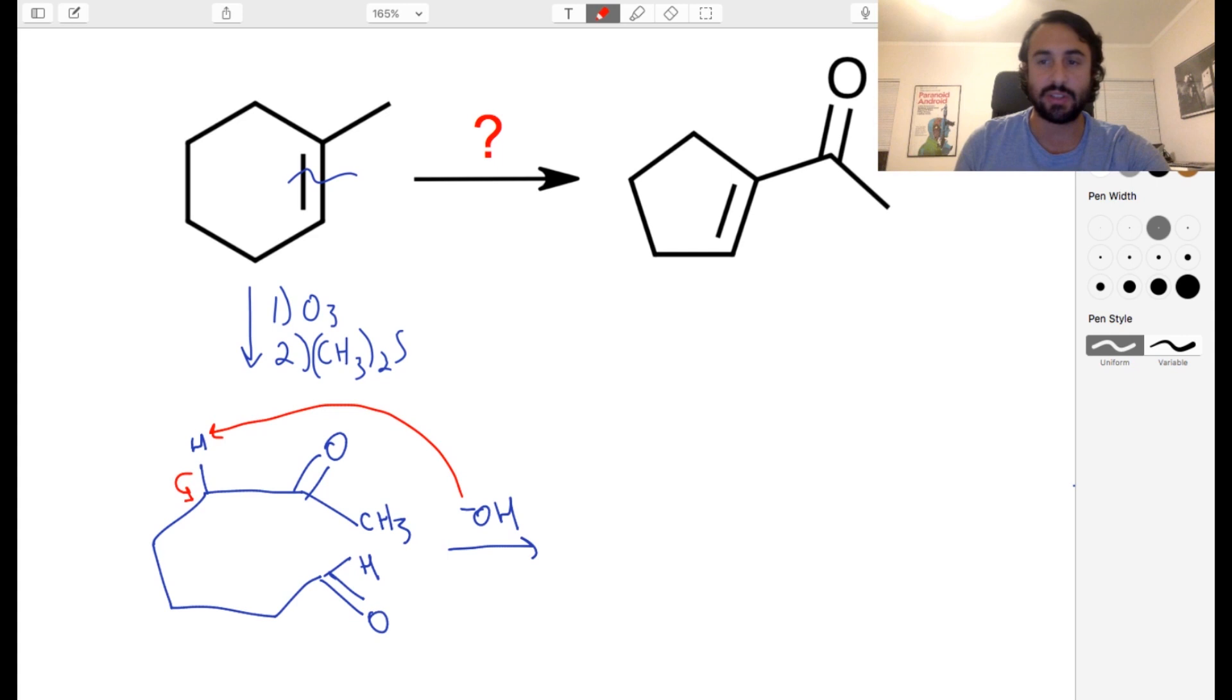So let's make our enolate. I'll just leave the negative charge there because that will make it easier to show the mechanism from there. And so to be clear, we could have gotten a proton from either carbon, right? It's not that the hydroxide is exclusively going to deprotonate at this location. It certainly can deprotonate at the methyl as well.